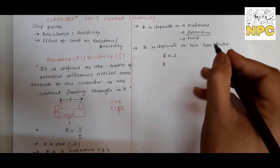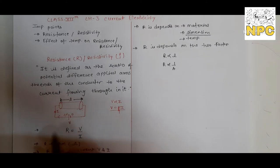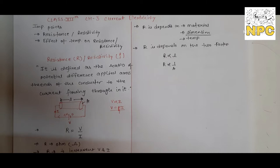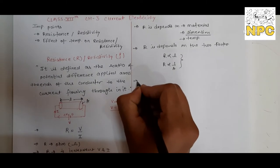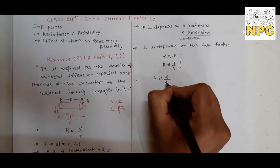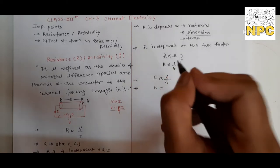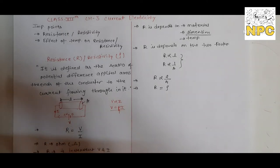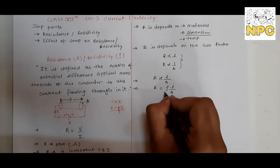The second factor is that R is inversely proportional to the area of cross-section A of the conductor. If we combine these two equations, R is proportional to L by A. If we remove the proportionality sign and introduce a constant, we get R equals rho times L by A. Here, rho is the resistivity.